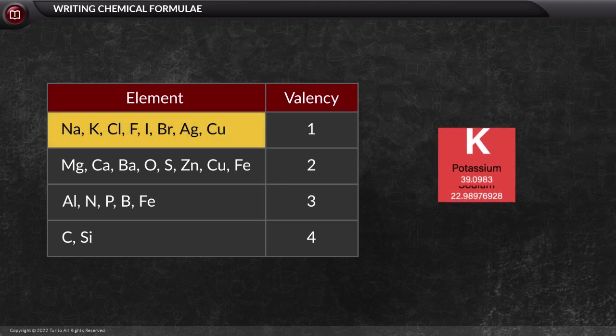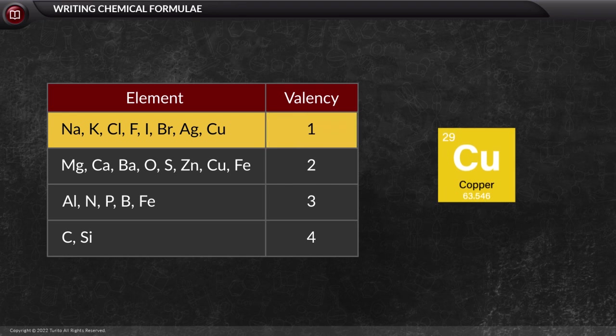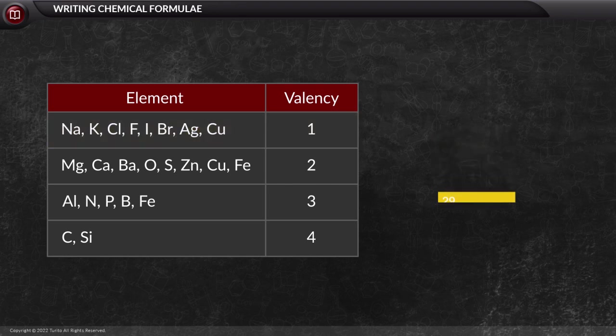Some common valency values are as follows. Sodium, potassium, chlorine, fluorine, iodine, bromine, silver and copper show valency 1.